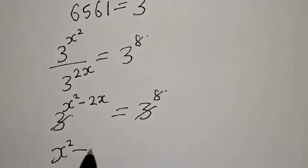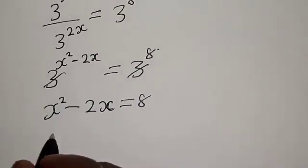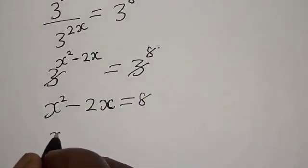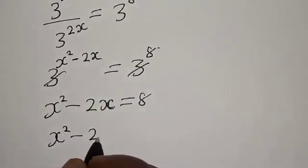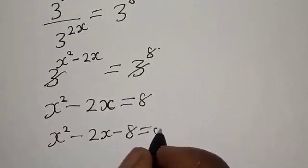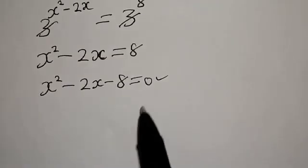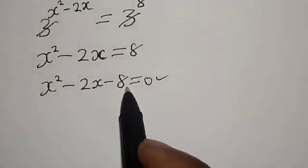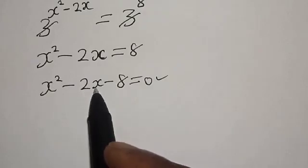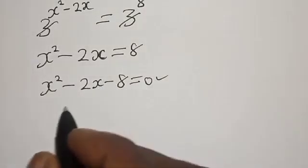We now have 3 raised to power s squared over 3 raised to power 2s, which equals 3 raised to power 8. Using the law of exponents for division, the left-hand side becomes 3 raised to power s squared minus 2s. Since the bases are equal, we equate the exponents: s squared minus 2s equals 8, giving us the quadratic equation s squared minus 2s minus 8 equals 0.